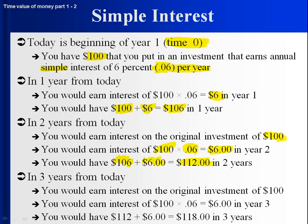Year three — similar thing. You earn 6% on the original $100. So how much do you have after three years? You would have the $112 from after two years, plus the $6 interest you got in the third year, which gets you to $118. As you can see, every year you're simply getting $6 of interest.